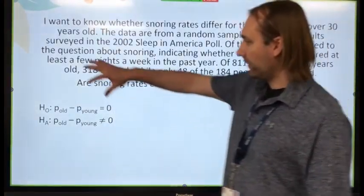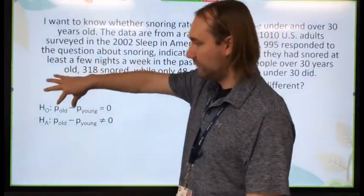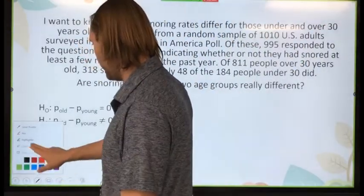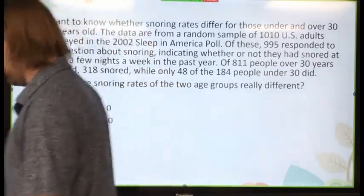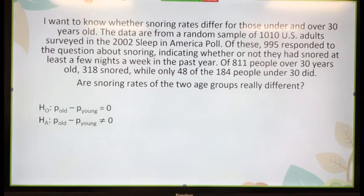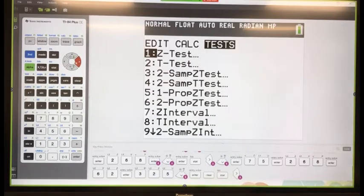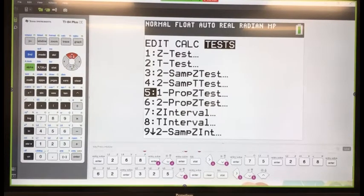I'm comparing old with young. My first value is going to be old. Just like with confidence intervals, there is hypothesis testing in the calculator with two proportions. Go to stat, test — when I had just one proportion I went to 1-PropZTest. With two proportions, you go to 2. That is correct.